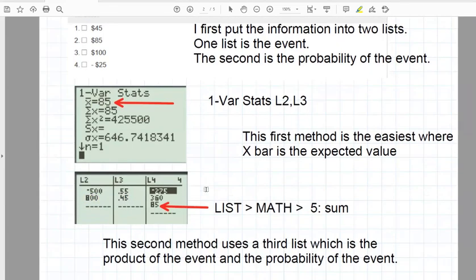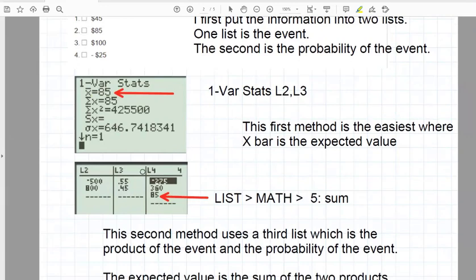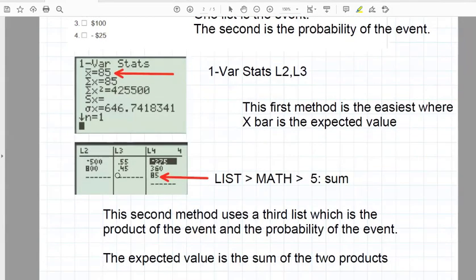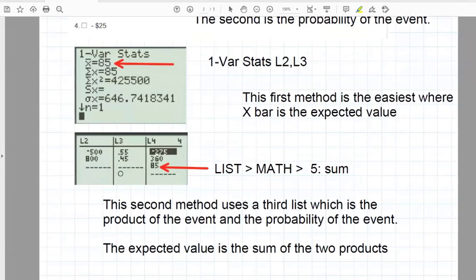Now, a second way of doing this would be to have those, and it's not the most straightforward way of doing this, but another way of finding the expected value for this sort of contingency table where you've got the events and the probability of the events is then formulate list four or the next list by saying that L4, when you put the cursor on the title for L4, L4 is equal to L2 times L3.